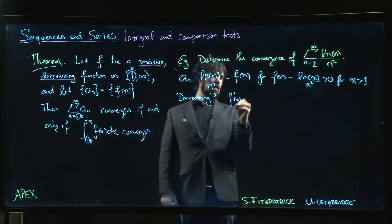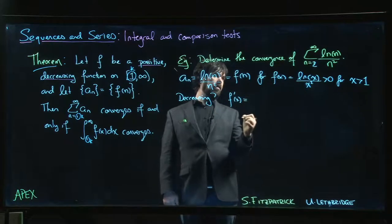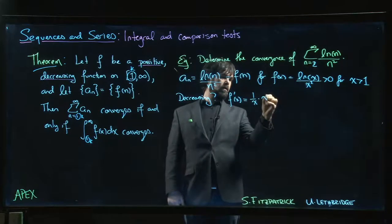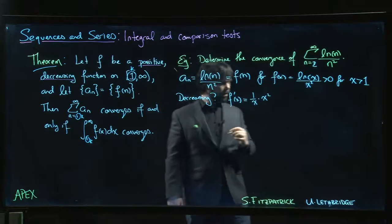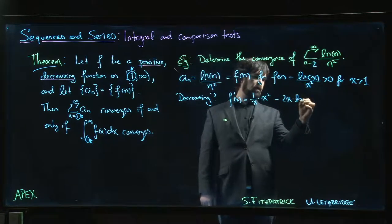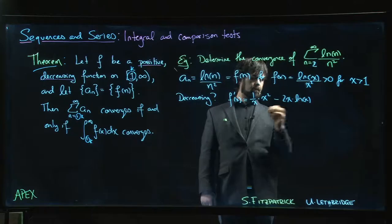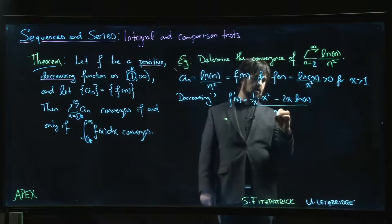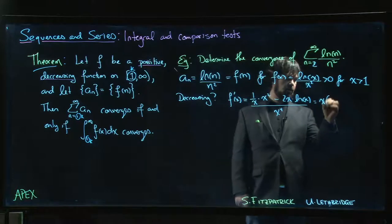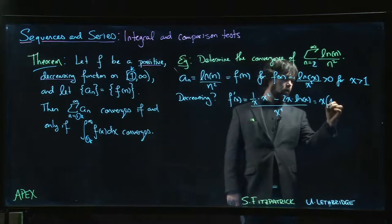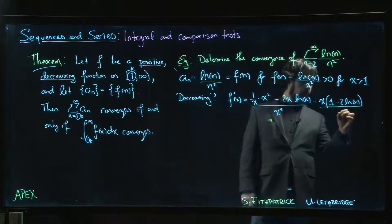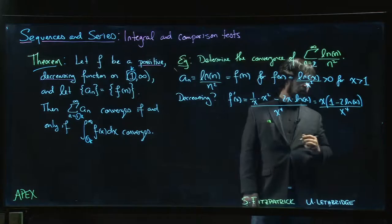Let's look at the derivative. f'(x) is going to be, well, let's do quotient rule. Derivative of the top, 1 over x times x squared minus derivative of the bottom times the top divided by the bottom squared, x to the 4. So this is going to be x times 1 minus 2 log x over x to the 4.